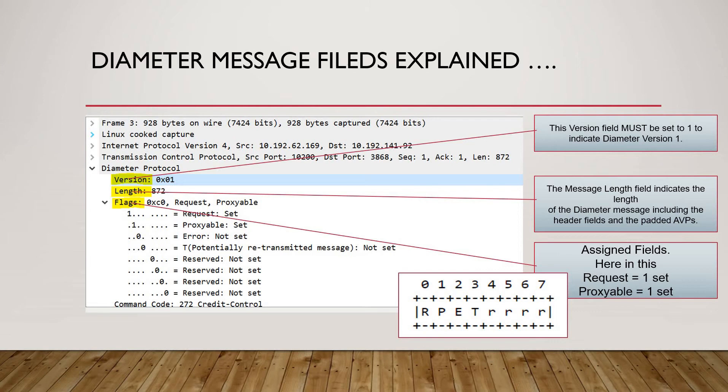This is the new slide wherein I have explained what is version. This version field must be set to 1 to indicate diameter version 1. Currently the diameter version is 1 only. Then the length, the message length field indicates the length of the diameter message.